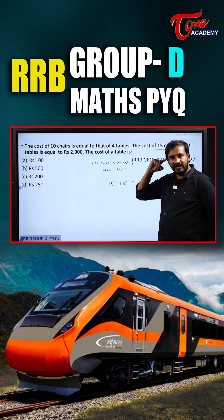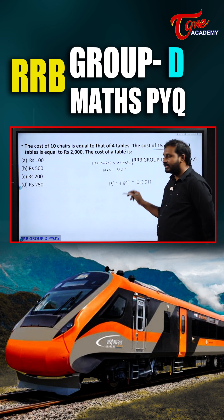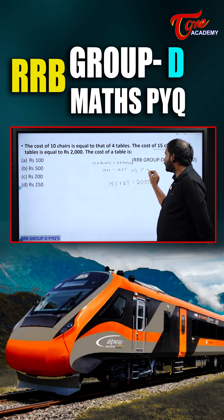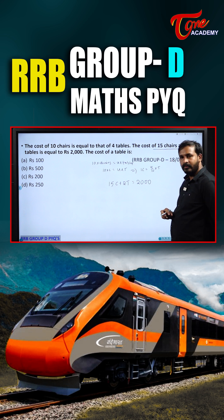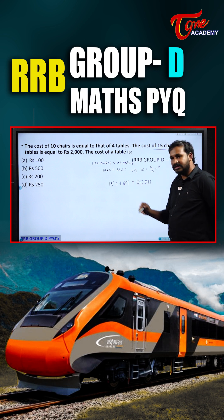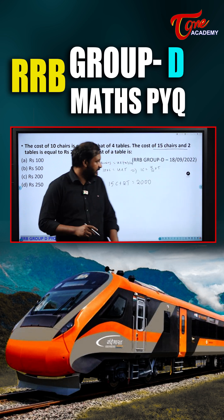See here, students — I will write chairs in terms of tables so that everything will become tables. So 1 chair will become 4 by 10 into table. I will substitute the same thing here.